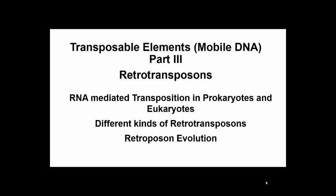We're about to look at the type 1 transposons that, unlike type 2 or DNA transposons, move via an RNA intermediate. They exist in all cell types, but we'll focus on what we know about eukaryotic retrotransposons, which have been extensively studied.